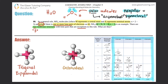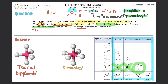For trigonal bipyramidal, looking at seesaw: it has only one lone pair among four groups — that's not symmetrical, so it's ruled out. Looking at T-shape: the two lone pairs both point in the same direction (left), while the bonding groups go to the right — that's also asymmetrical, so T-shape is ruled out as well.